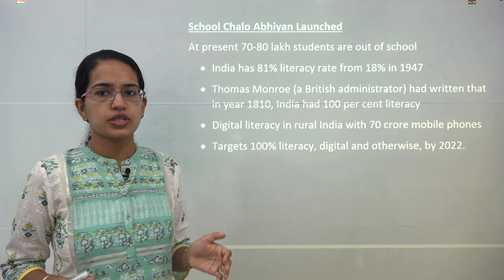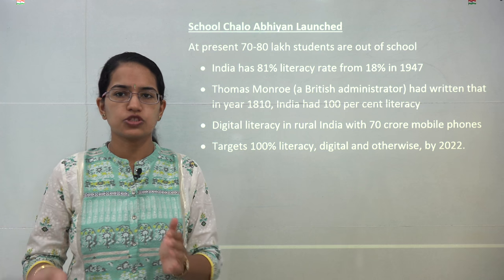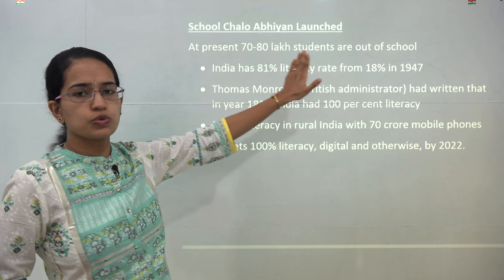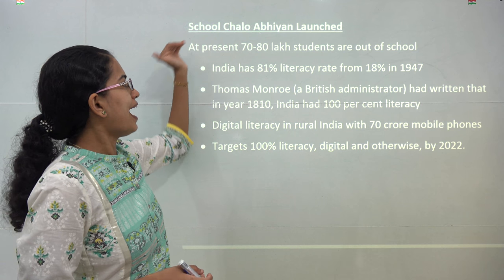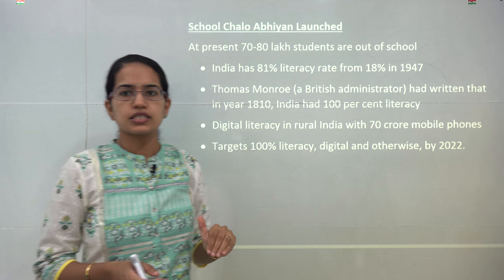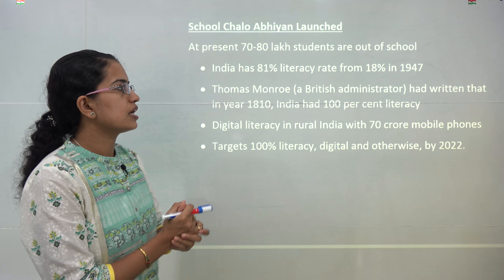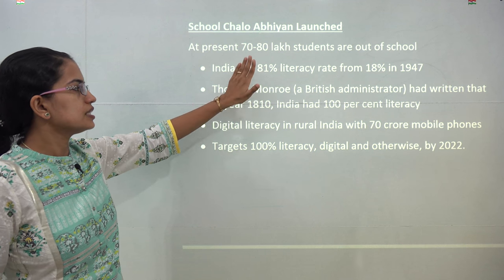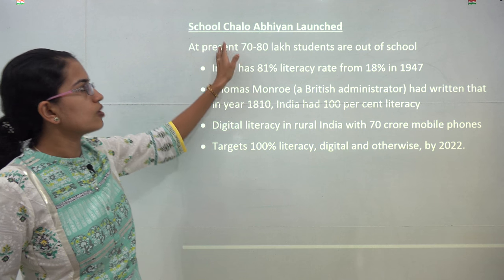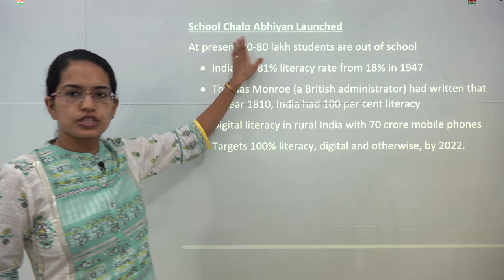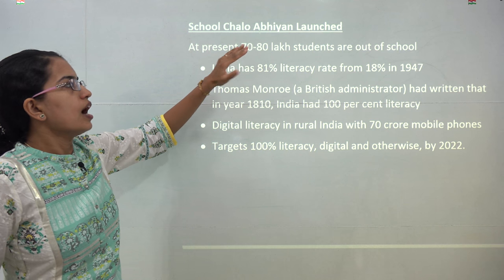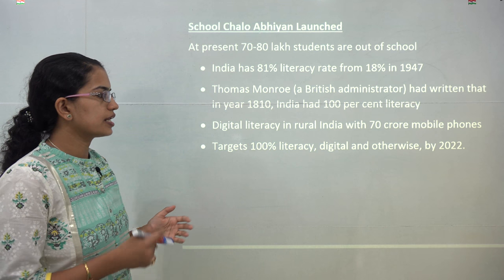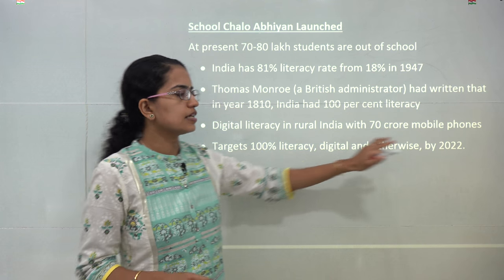Even after the Sarva Shiksha Abhiyan, there were nearly 70 to 80 lakh students in India not part of the education system. Based on this, the Chalo School Abhiyan was started with the goal of achieving 100 percent literacy. Pre-independence in 1947, the literacy rate was only 18 percent, which has now jumped to 81 percent. The scheme also includes advancing digital education in rural areas, with a target of 100 percent literacy by 2022.